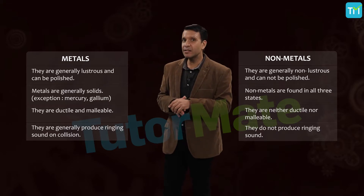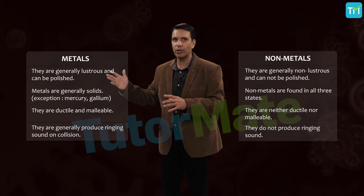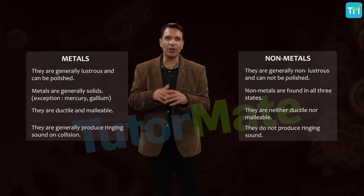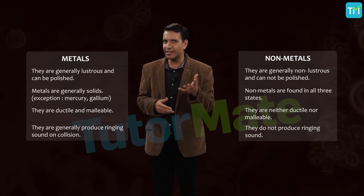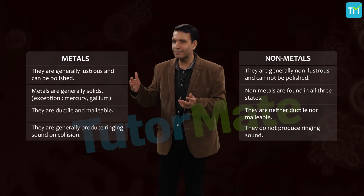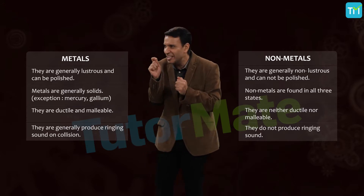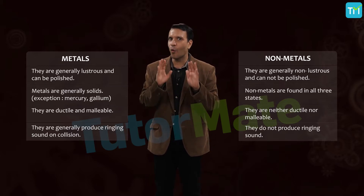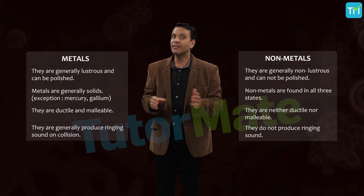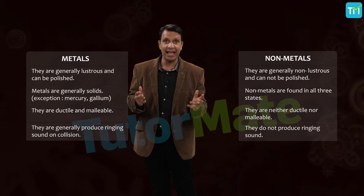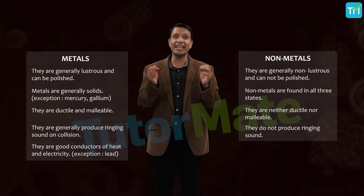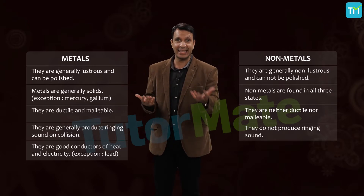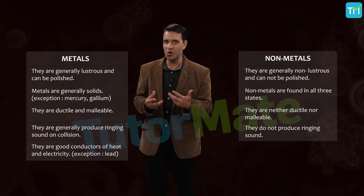Metals are opaque — so even if you hammer down a piece of metal to a fine thin foil, it will never be transparent. Non-metals are not malleable. The shiny thread-like material inside electrical wire insulation is made of metal, because metals are excellent conductors of heat and electricity. Metals lose electrons easily, and free electrons can move throughout the metal, conducting heat and electricity.